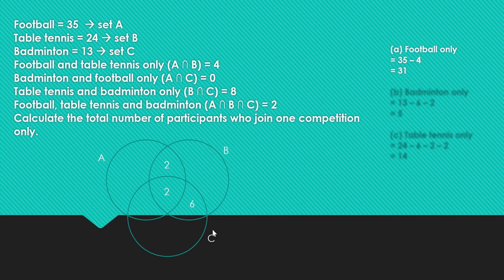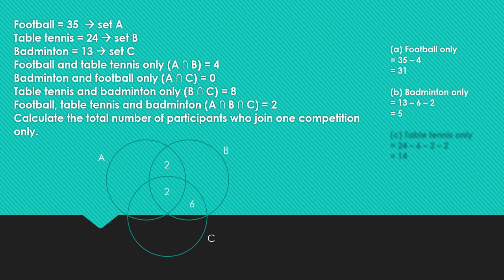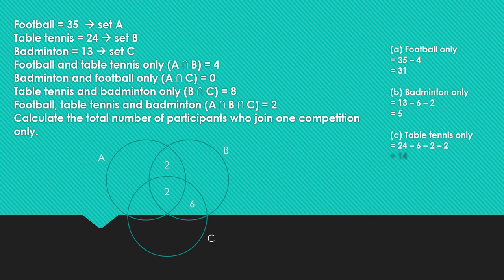For set C, which refers to badminton, we have 13 participants total. We deduct 6 and 2. Therefore, badminton only is 13 minus 6 minus 2, which equals 5. For set B, table tennis, the total participants is 24. We deduct 2, then 2, then 6, then 2 more. Therefore, table tennis only is 24 minus 2 minus 6 minus 2 minus 2, which equals 14.